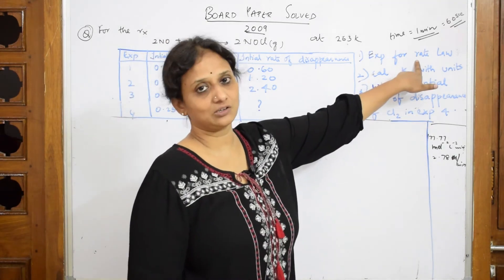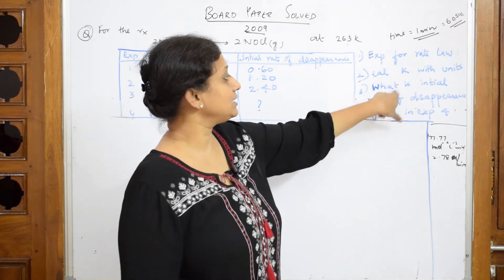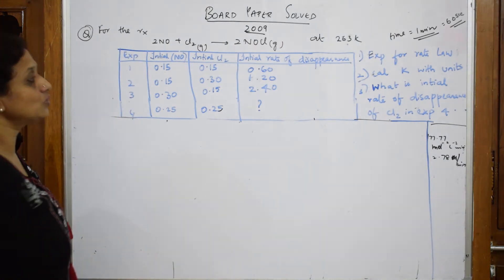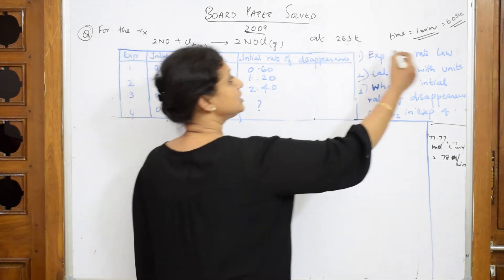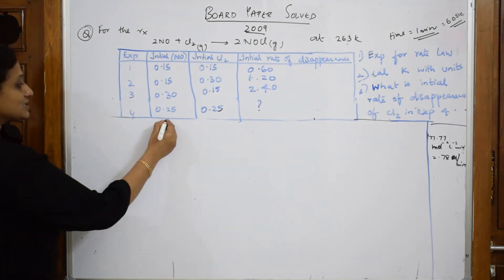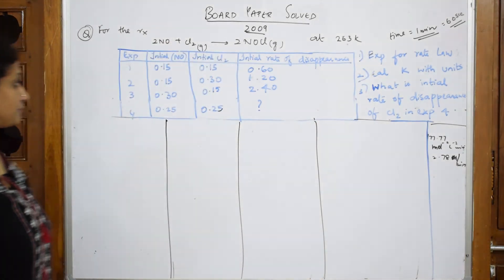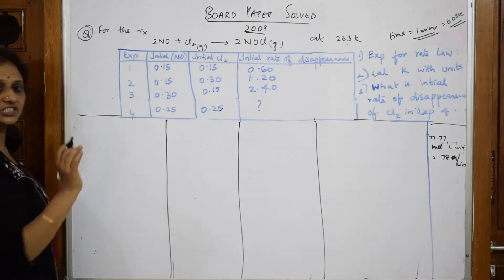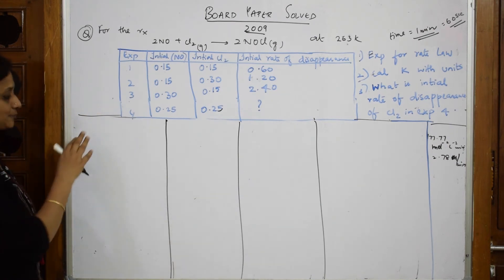After that, they have also given me data where initial rate of disappearance, what is the concentration when this particular reactant has disappeared? What do they want me to calculate? They want me to calculate the rate law. After that, rate constant. I have to calculate the initial rate of disappearance of Cl in the experiment. Many things to prove. Let us go step by step. One more thing is in this particular equation, the time they have given is one minute.